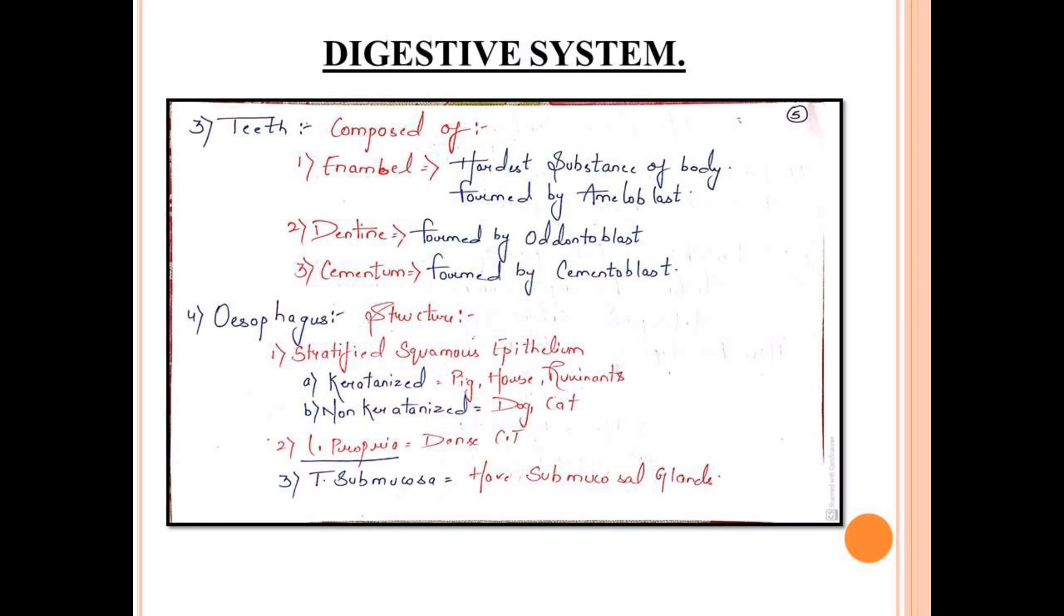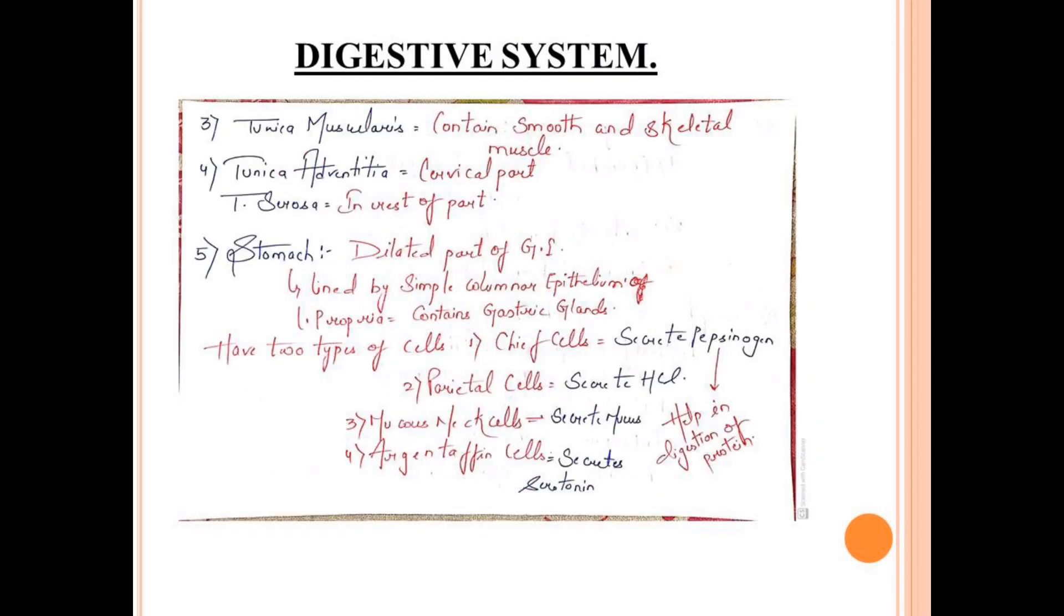Another structure is lamina propria. Lamina propria characteristic is dense connective tissue. We have learned that it is loose, but here it is dense connective tissue. Moving to the next, tunica submucosa will have submucosal glands. The remaining structures are similar to the general organization, so I am not discussing them here. The next structure involved is tunica muscularis, consisting of smooth muscles and skeletal muscles. Another one is tunica adventitia or tunica serosa.